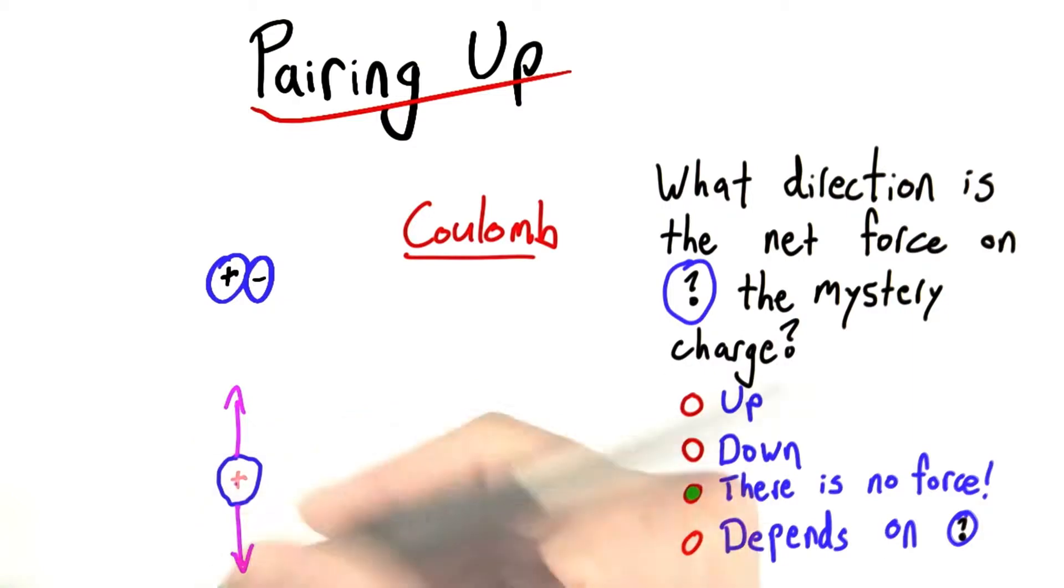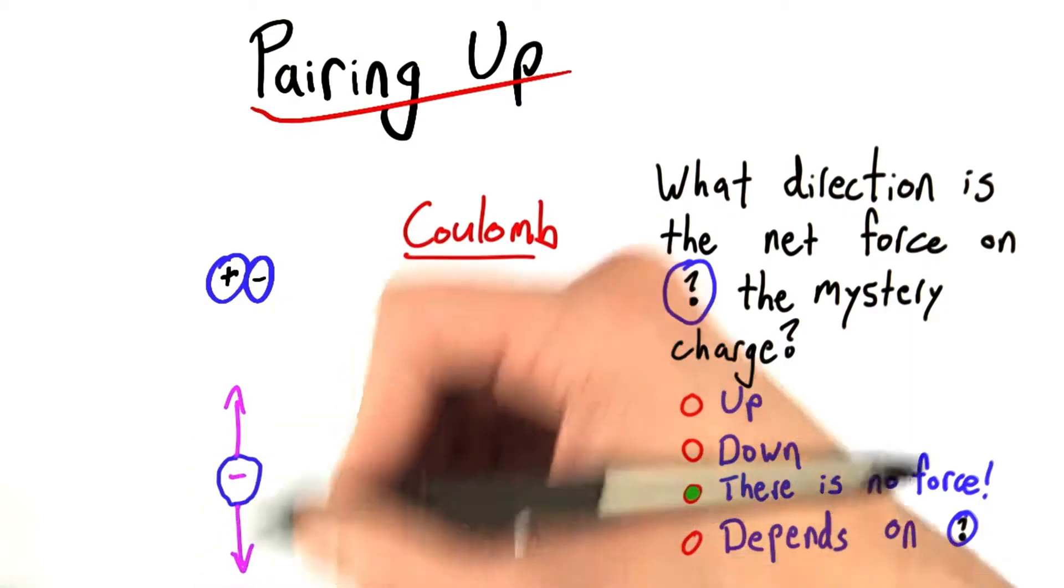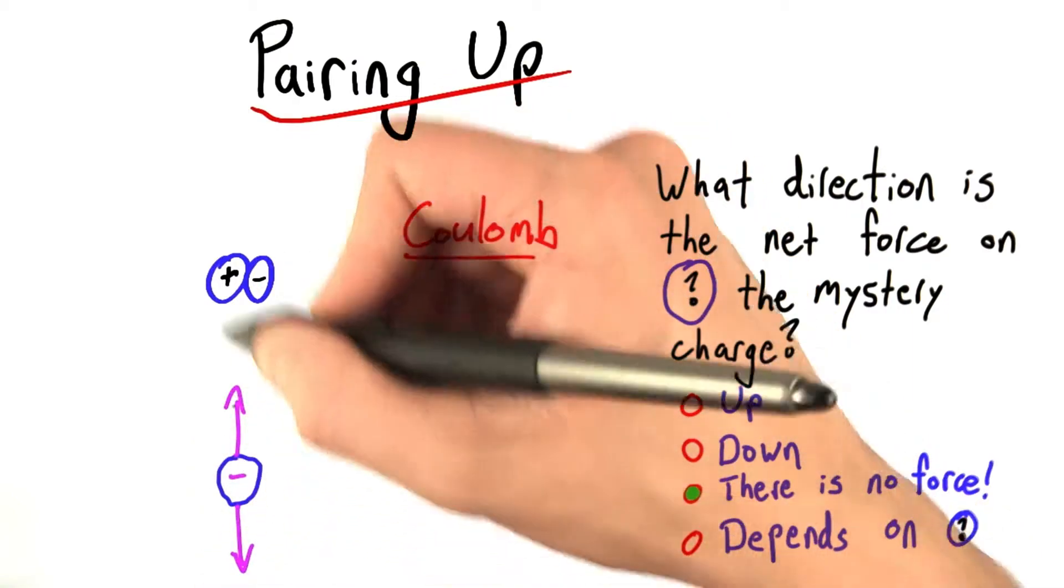And so, no force. If this guy were negative, same thing, except now the repulsion comes from the negative force, and the attraction comes from the positive.